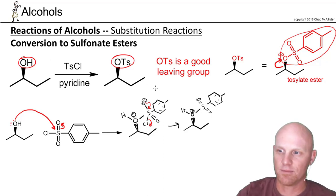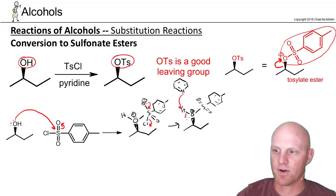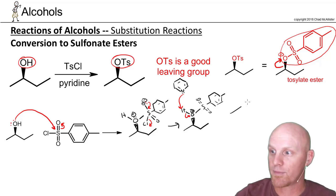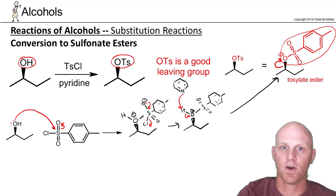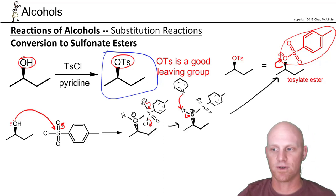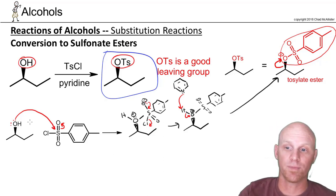Pyridine's job is to come in and deprotonate, just like we saw with PBr3 and SOCl2. That gets us to our product — the tosylate ester, which we abbreviate as OTs. Some students will only ever see the abbreviation, but it's worth going through the mechanism because it is presented in quite a number of classes. The whole point is that the tosylate ester is a phenomenal leaving group in its own right.